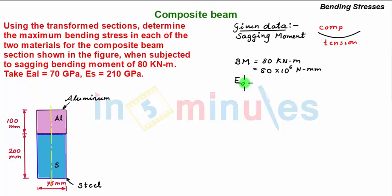And Young's modulus of aluminium is given as 70 GPa, so 70 × 10^3 N per mm². And E of steel is equal to 210 GPa, so equal to 210 × 10^3 N per mm².